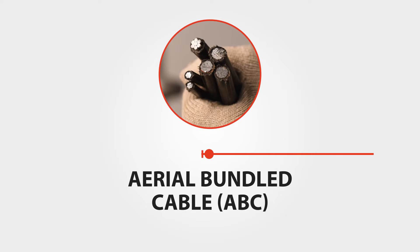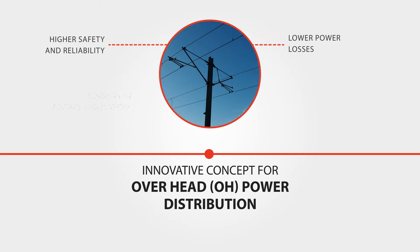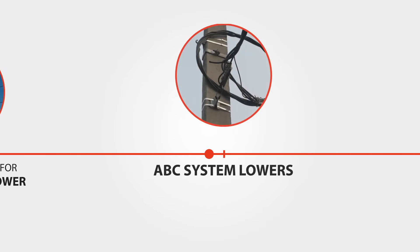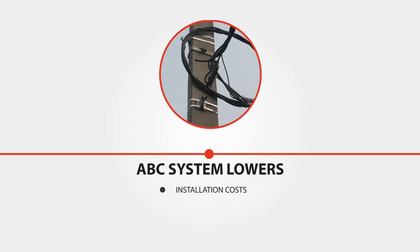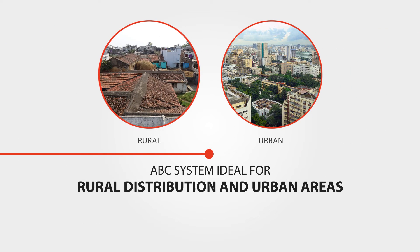Aerial Bundled Cable is an innovative concept for overhead power distribution. It provides higher safety and reliability, lower power losses, stability in voltage regulation, and ultimate system economy. The ABC system lowers installation, maintenance, and operation costs. The system is ideal for both rural distribution and in congested urban areas.